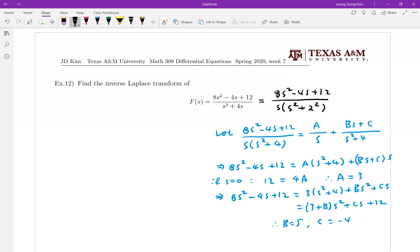Okay, with this one let me come back. Your F(s) can be written by 3/s and (5s - 4)/(s² + 4).